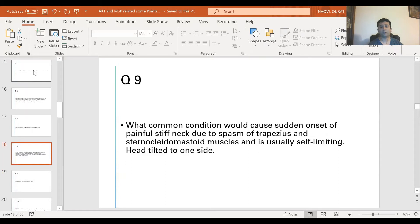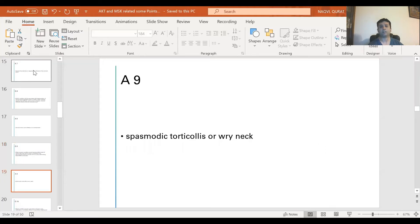Question 9: What common condition would cause sudden onset of painful stiff neck due to spasm of trapezius and sternocleidomastoid muscle and is usually self-limiting? Usually when the patient presents they present with head tilted to one side. The answer is spasmodic torticollis or wry neck.